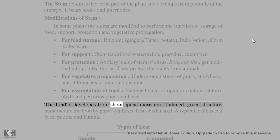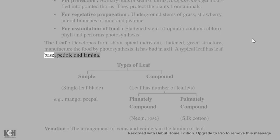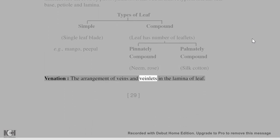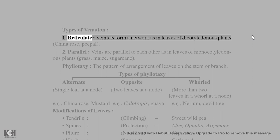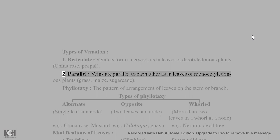The leaf develops from the shoot apical meristem; it is a flattened, green structure that manufactures food by photosynthesis. It has a bud in the axil. A typical leaf has a leaf base, petiole, and lamina. Types of leaf: simple (single leaf blade, e.g., mango) and compound (leaf has a number of leaflets — pinnately compound e.g., neem; palmately compound e.g., silk cotton). Venation is the arrangement of veins and veinlets in the lamina. Types: reticulate (veinlets form a network, as in dicotyledonous plants — China rose) and parallel (veins are parallel, as in monocotyledonous plants — grass, maize, sugarcane).